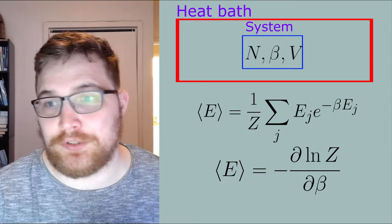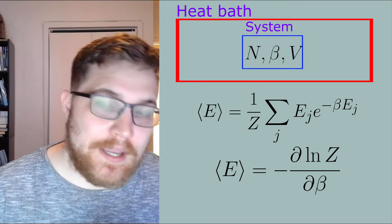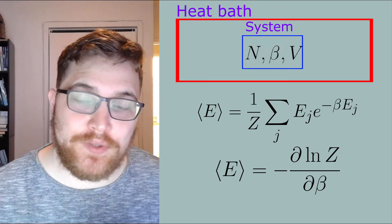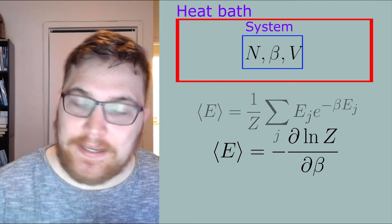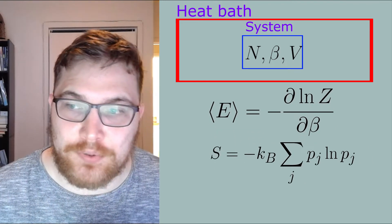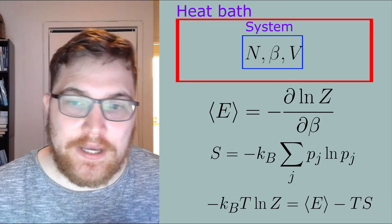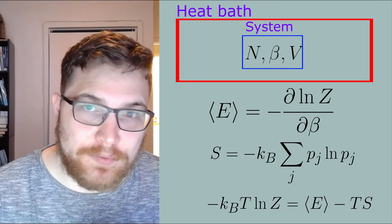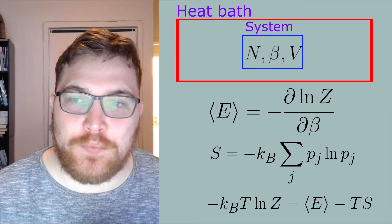We can express the average energy of our system as the following expression. This can be re-expressed in terms of the partition function in this little neat formula here. And if we appeal to the Gibbs entropy again and type in our probabilities, we arrive at a nice relationship between the partition function and energy and the entropy.